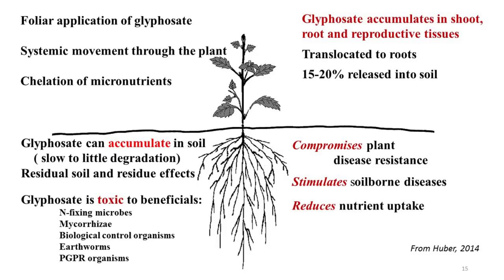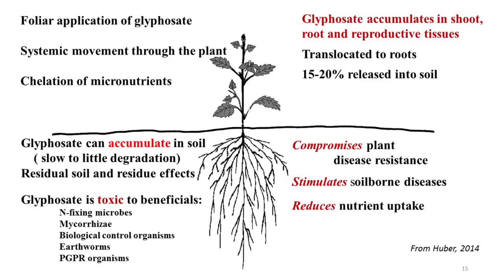Glyphosate is a systemic chemical — something a lot of people don't understand. This is a systemic chemical that rapidly translocates through a plant and accumulates in meristematic and reproductive tissue. Meristematic tissue is the growing points; reproductive tissue is the part that we harvest. Glyphosate is stable and active within a plant and does not dissipate within a plant over time. Plants cannot metabolize glyphosate — there's nothing within a plant's metabolism that can do anything with that molecule. Within the plant, glyphosate chelates cations, notably manganese, and that's what shuts down the EPSPS enzyme.